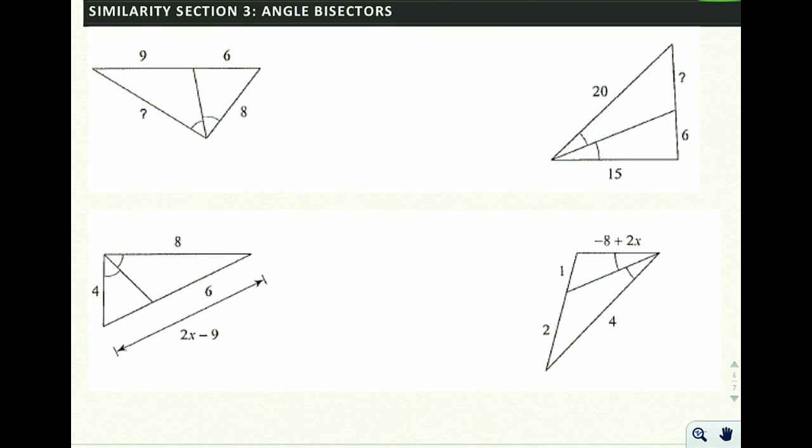One thing about angle bisectors that seems counterintuitive is you can set up proportions between the sides and the pieces that are cut off. If you want to learn more about why, ask me about it.